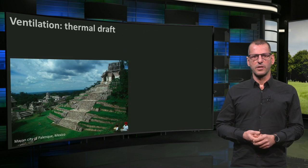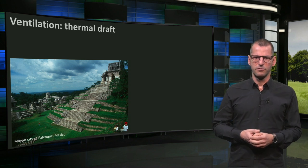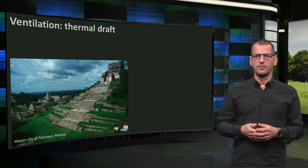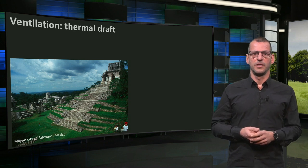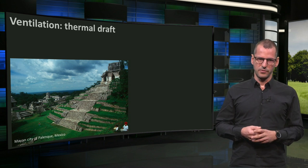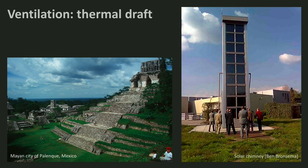Now let's have a look at passive means of ventilation. Ventilation can be established by over and under pressure. Thermal stacking is another way: a south-oriented dark stony surface will heat up during the day and consequently heat the air above it. This air then becomes lighter and will rise upwards, creating a thermal draft. This principle can be used when we want to create naturally enforced ventilation, such as through solar chimneys.